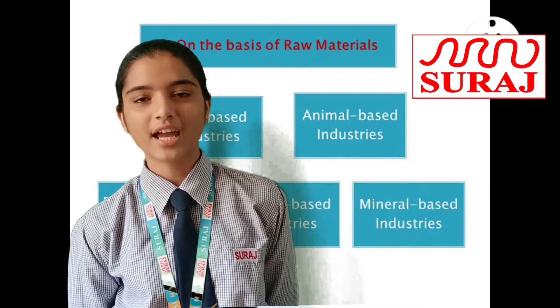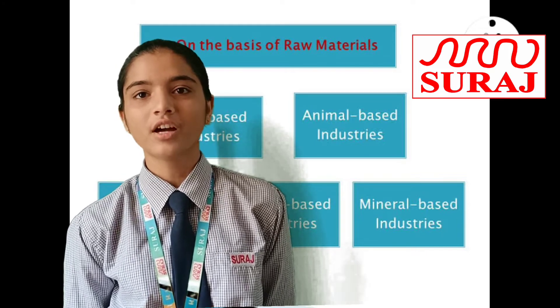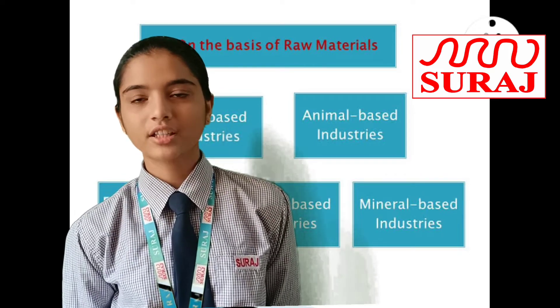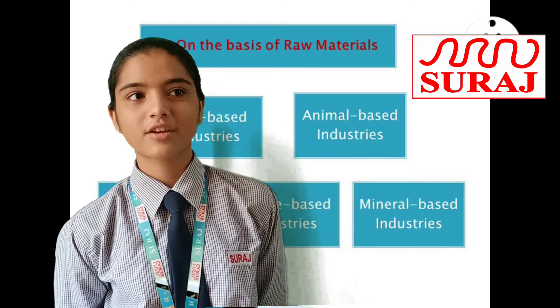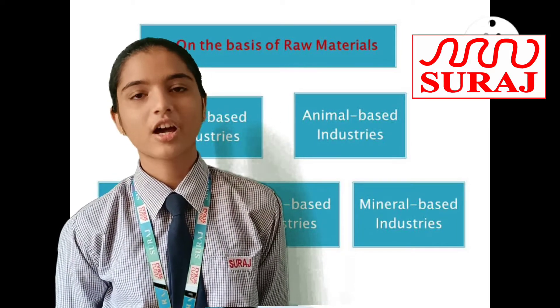There are three types of industries: on the basis of size, on the basis of ownership, and on the basis of raw materials.